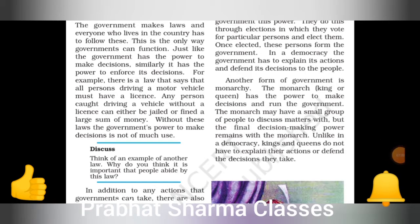The monarch may have a small group of people to discuss matters, but the final decision remains in the hands of the monarch. Monarch के पास कुछ small group में लोग रहते हैं जो नवरतन होते हैं — अपने हर area के expert। वो मिलकर राजा को advice देते हैं, but last में power राजा के हाथ में होती है और वही decision लेता है।